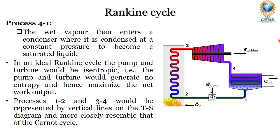In process 4 to 1, the wet vapor enters the condenser where it is condensed at constant pressure to become a saturated liquid. Here, latent heat is involved so that the vapor form is completely condensed into liquid form.